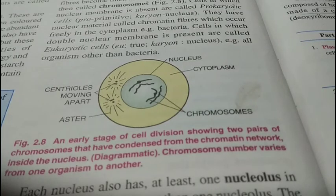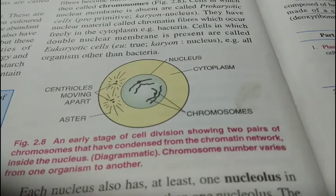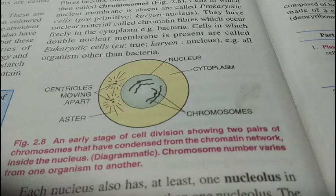The chromosome number is fixed for different organisms. For example, the honeybee contains 32 chromosomes, the lion has 38, the dog has 78, and the chimpanzee has 48. Human beings have 46 chromosomes.